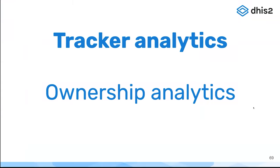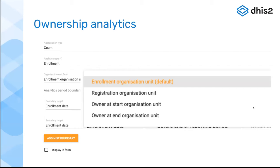The next feature is the ownership analytics feature, which is a collaborative effort between many teams. It ended up on my plate to demo, but in reality this is an analytics backend feature as well as a frontend feature — it's a maintenance app platform frontend feature — and I'm representing it here today on behalf of all those teams. On the user interface it doesn't look too impressive or conspicuous: we have one new dropdown field in the program indicator screen called 'organization unit field,' and this field is there to allow analytics that specifically targets the owner of tracker data.